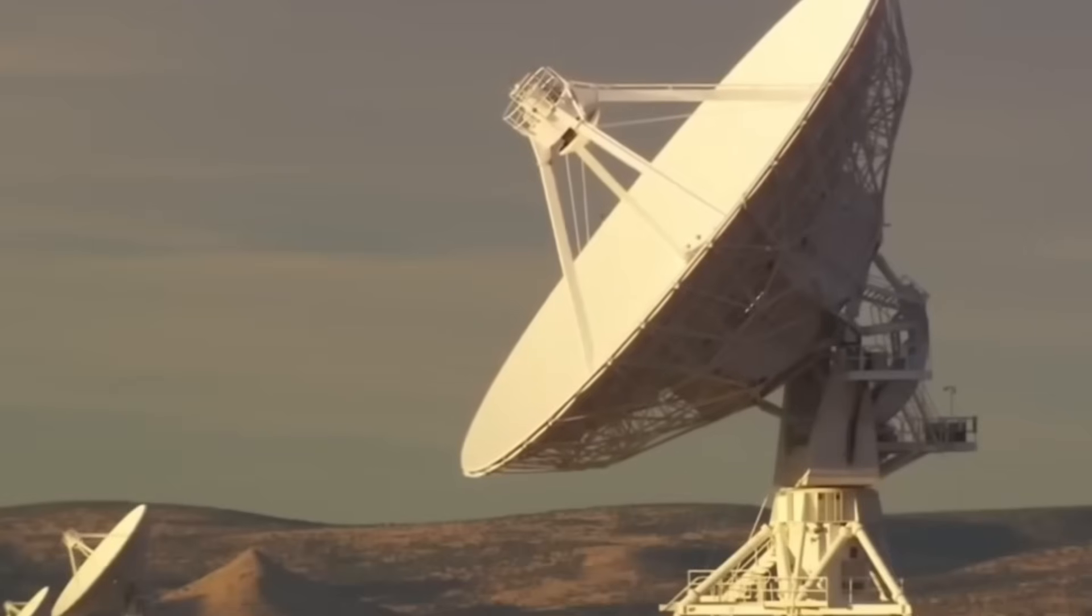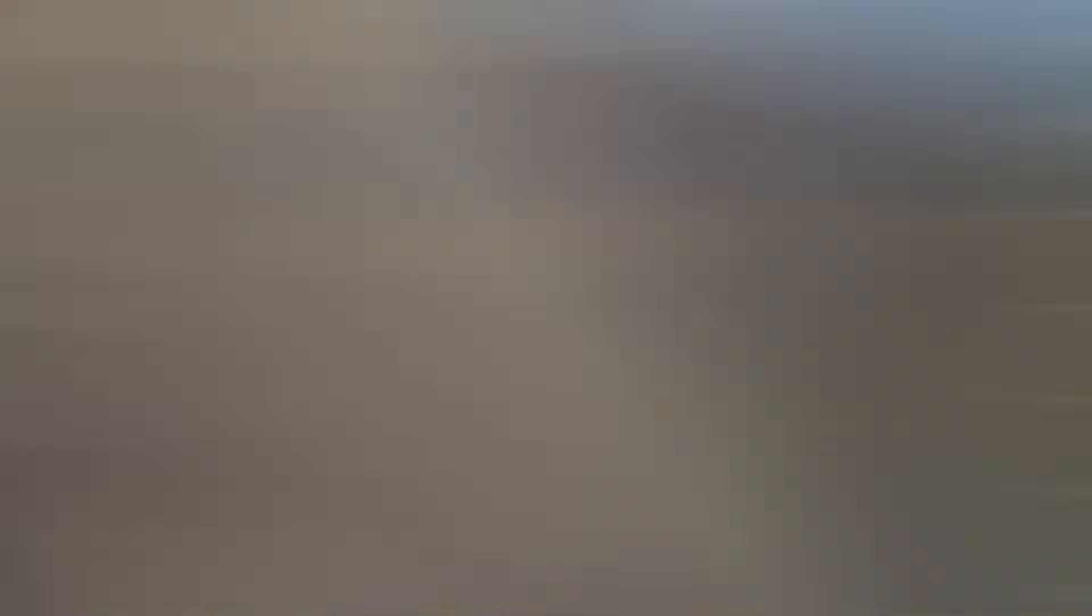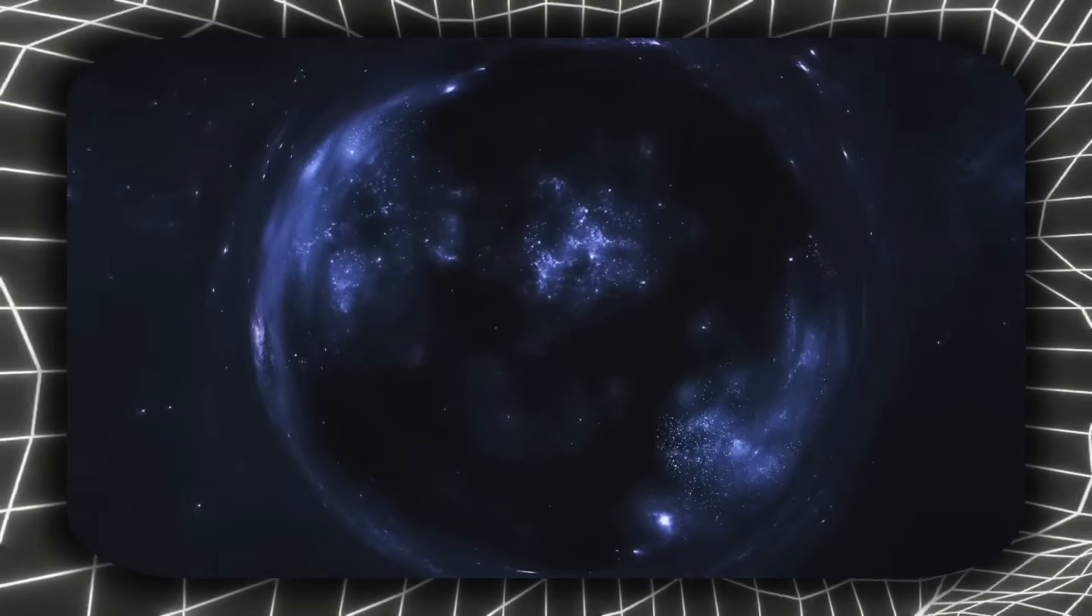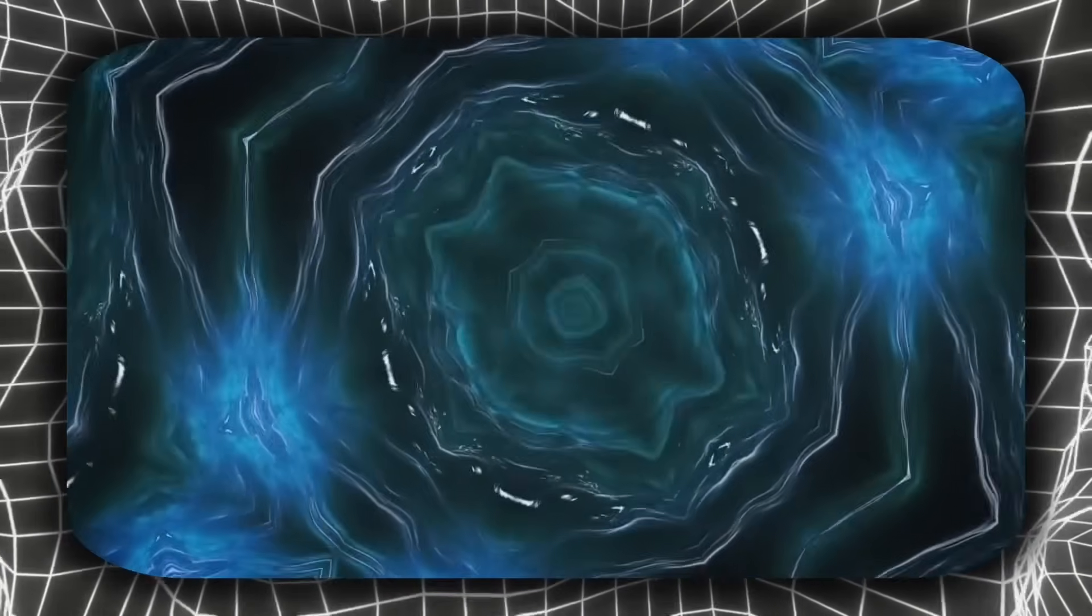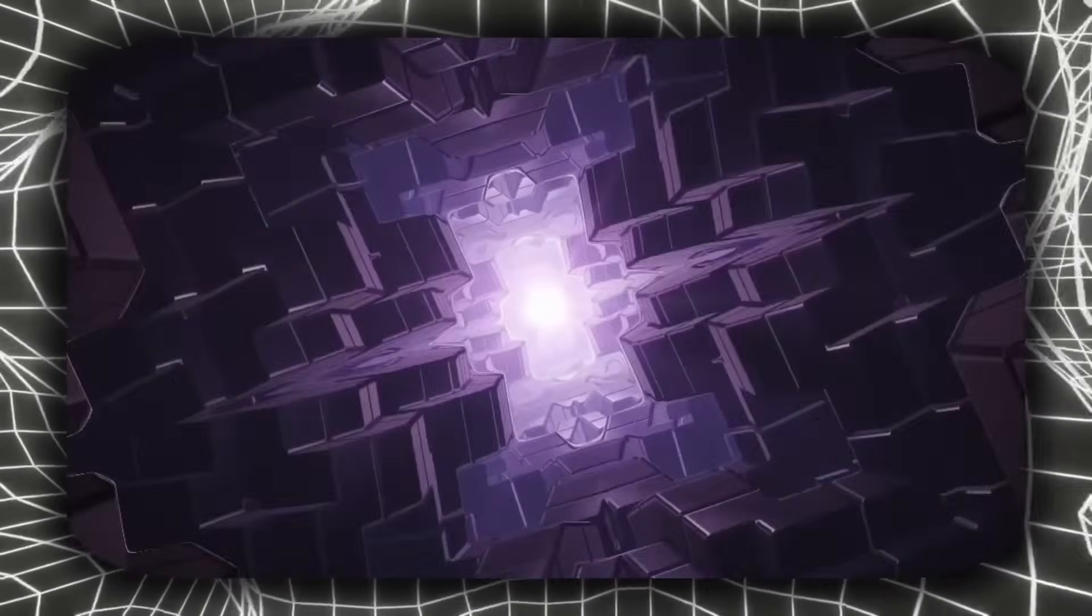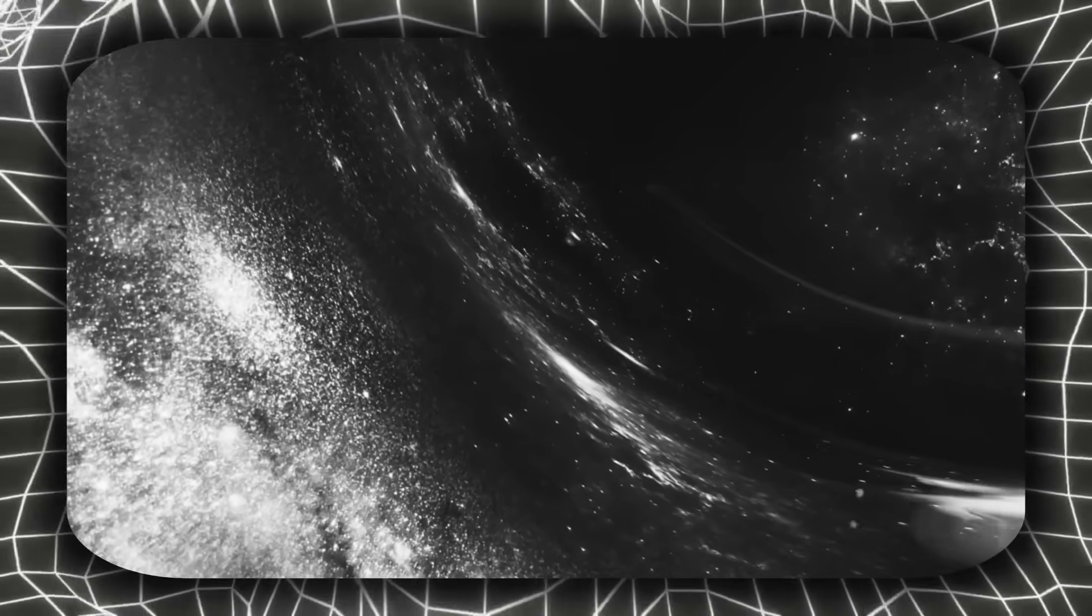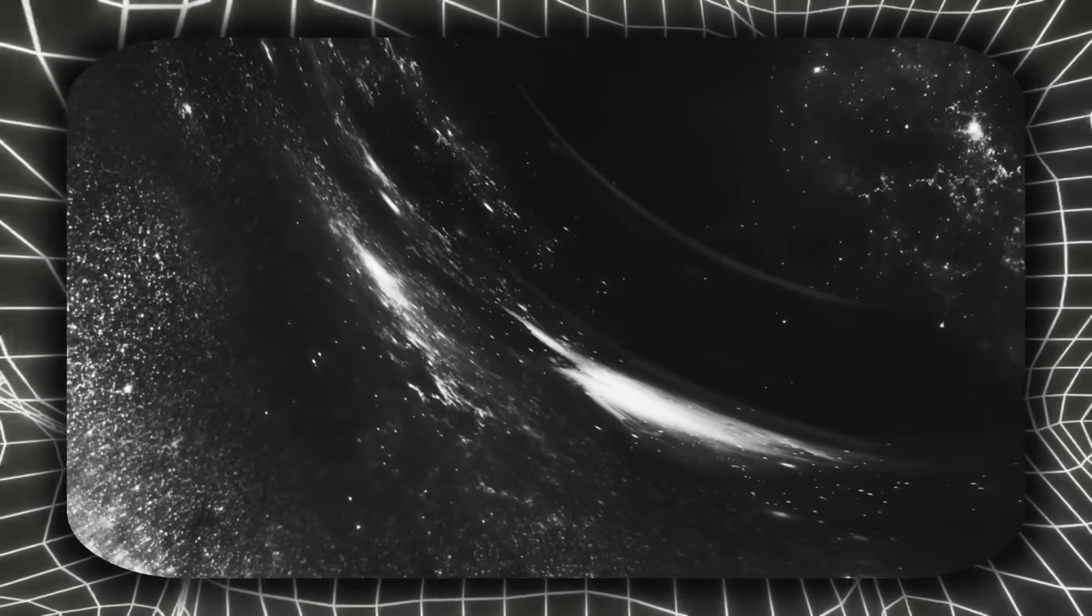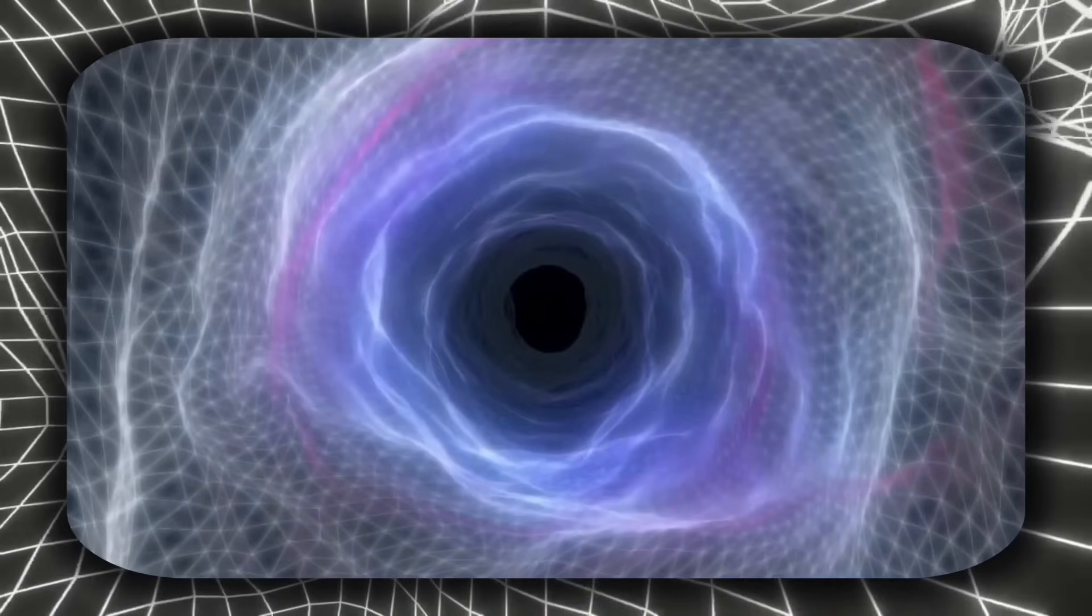But what Voyager detected at the edge of our solar system challenges everything we thought we knew about the universe's expansion. The spacecraft's sensors have picked up patterns in the interstellar medium that don't match our current models—unusual fluctuations in magnetic fields and plasma densities that suggest something extraordinary might be happening at the boundaries of known space. These anomalous readings might be our first tangible evidence of what exists beyond the cosmic horizon, or what our universe might actually be expanding into.